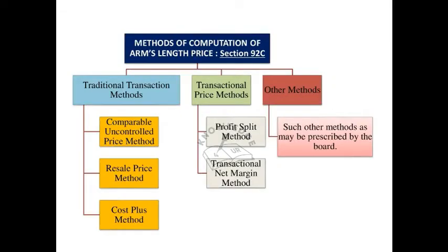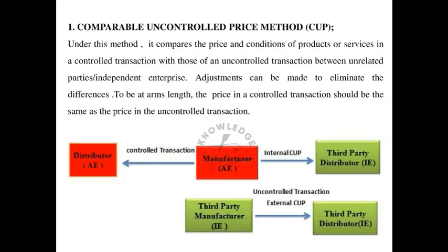The methods of computation of Arm Length Price are: first, Traditional Transaction Methods; second, Transactional Price Methods; and third, Other Methods. Traditional Transaction Methods consist of the Comparable Uncontrolled Price method (CUP), the Resale Price method, and the Cost Plus method.